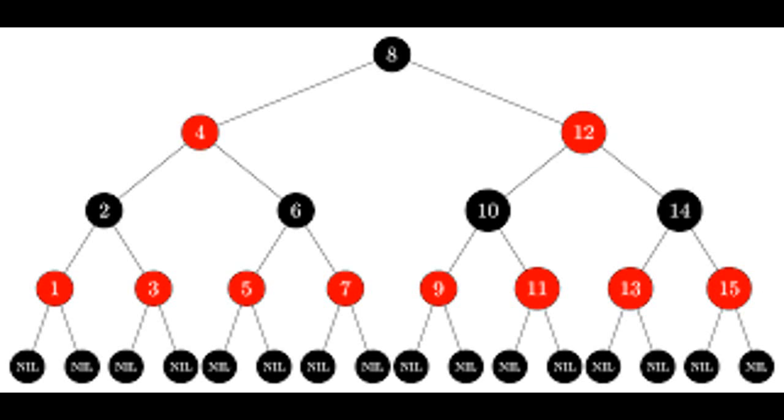We shall regard these nils as being pointers to leaves, external nodes of the binary search tree, and the normal key-bearing nodes as being internal nodes of the tree.